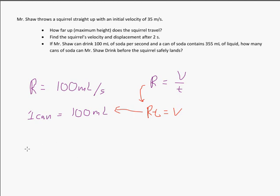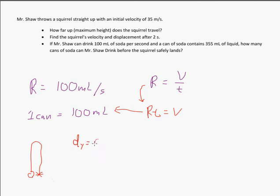The main culprit is time. When the squirrel comes back and lands, it goes up from its starting position and then comes back down and lands at the same place. The big thing to realize is it's going to return to the same place it was thrown from. So if you return to the same place you started, your displacement DY is going to be 0 meters.